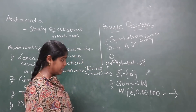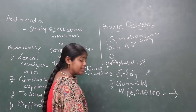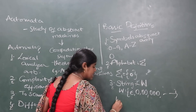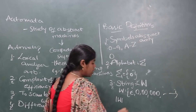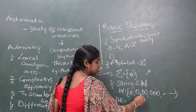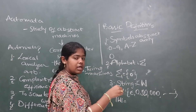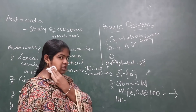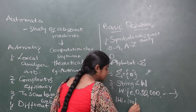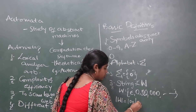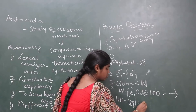A string is represented using W. The length of a string is denoted mod W. For example, if a string contains two 0s — first 0 and second 0 — the length of that string is 2.